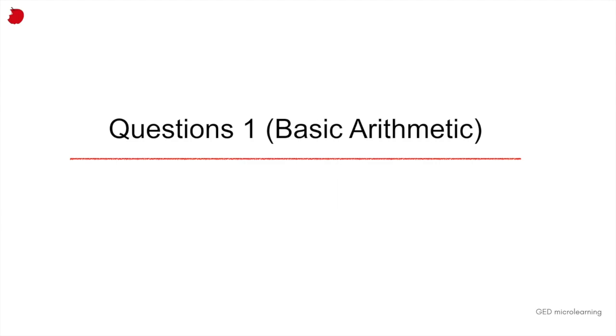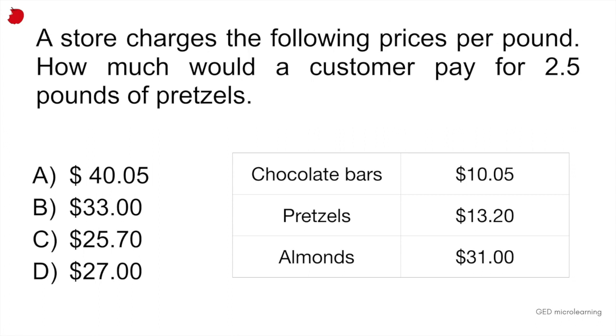So question one is a basic arithmetic question. It says, a store charges the following prices per pound. How much would a customer pay for 2.5 pounds of pretzels? All right. So here in the table, they're telling you that chocolate bars cost $10.05 per pound. Same thing for pretzels and almonds.